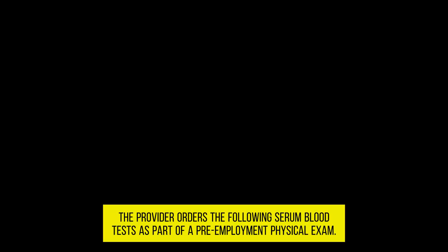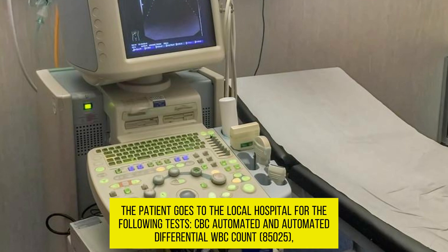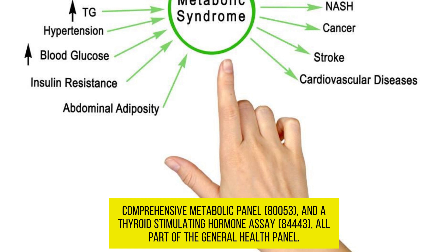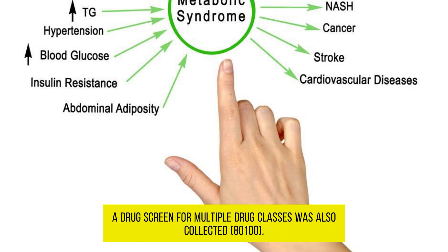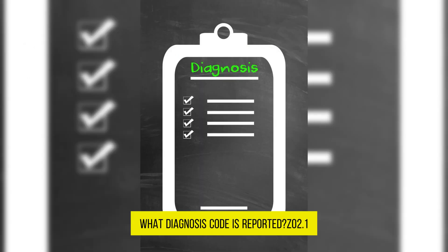The provider orders the following serum blood tests as part of a pre-employment physical exam. The patient goes to the local hospital for a CBC automated and automated differential WBC count 85025, comprehensive metabolic panel 80053, thyroid stimulating hormone 84443, all part of the general health panel. A drug screen for multiple drug classes was also collected, 80100. What diagnosis code is reported? Z02.1.